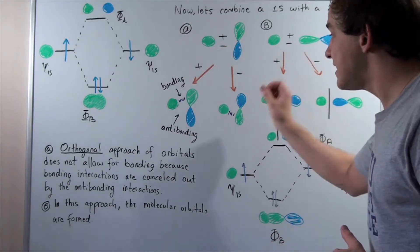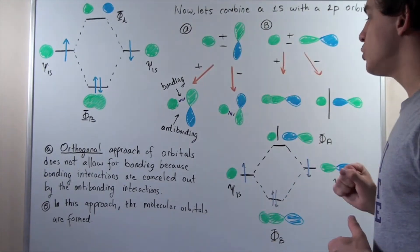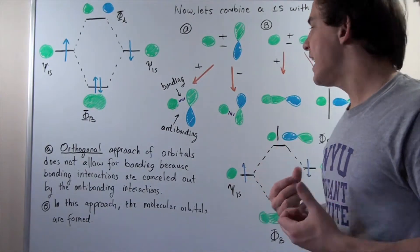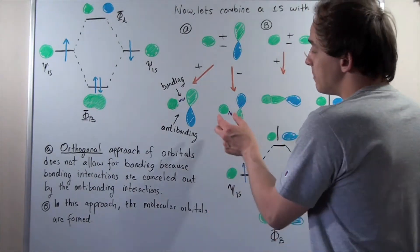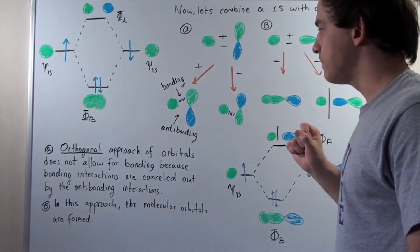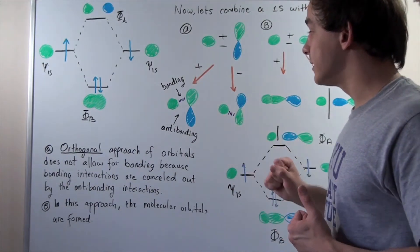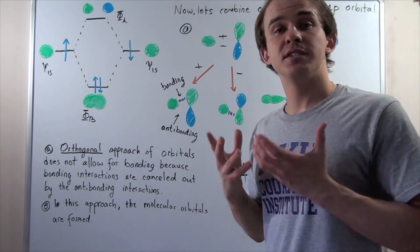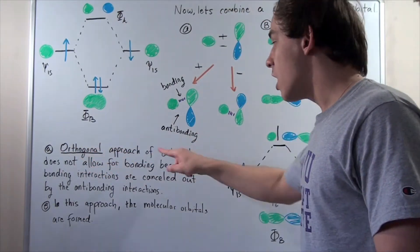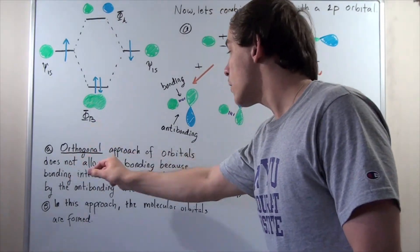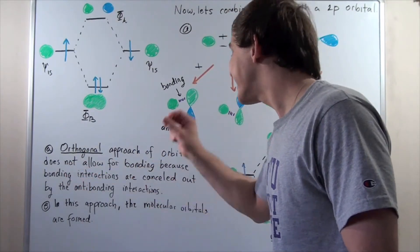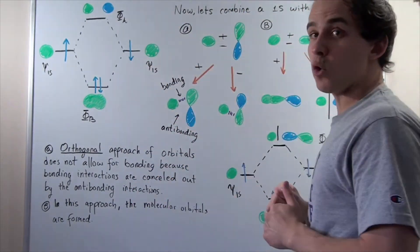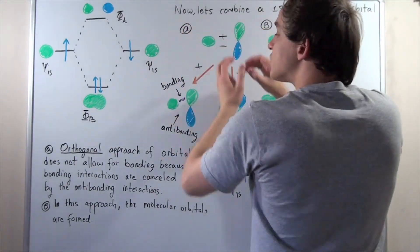Even though we flipped our 2p orbital, we still have a bonding orbital between the positive 1s and the positive 2p, and we have an anti-bonding interaction because we have a positive 1s and a negative 2p. When we have bonding and anti-bonding, the bonding will exactly cancel out the anti-bonding, and that means we will have a net interaction of zero. So the orthogonal approach of orbitals does not allow for bonding because the bonding interactions are canceled out by the anti-bonding interaction — there will be no interaction when the 1s and the 2p approach in this orthogonal fashion.